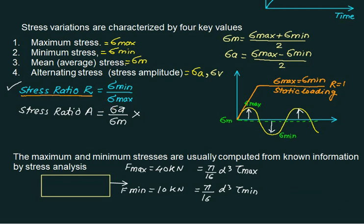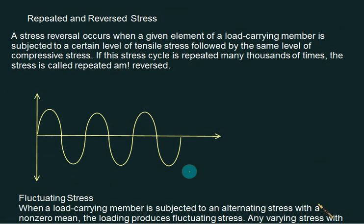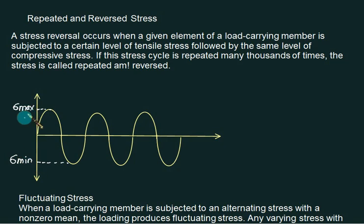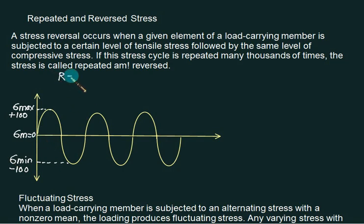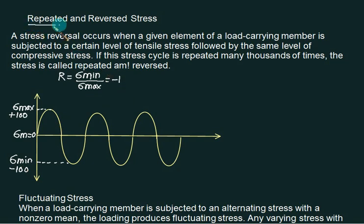The first case is repeated and reverse load. This value equals sigma max — the maximum value of stress — and this value equals sigma minimum. Assume from my figure that sigma max is plus 100 and sigma minimum is minus 100. In this case, the mean value comes out to be zero. The value of r equals sigma minimum divided by sigma max, so putting minus 100 and 100 gives r equal to minus 1.